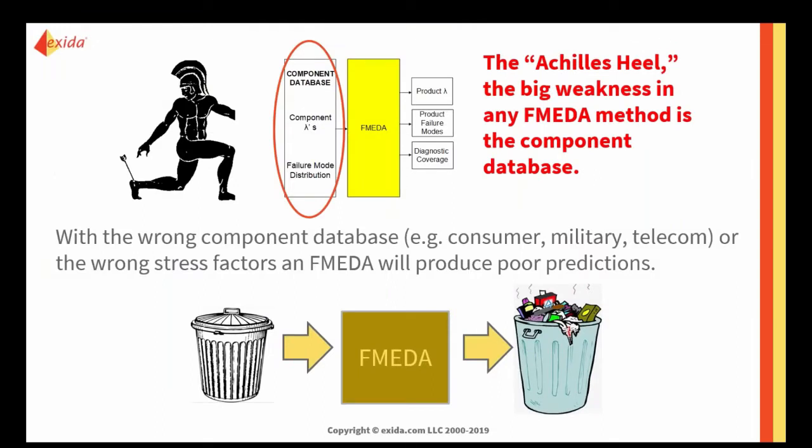Once the functional failure modes are entered, we press the button to add the component to the FMEDA, and the first four lines of the FMEDA are completed. If I want to check results so far, I hit 'view results' and can see the overall FMEDA results at any point. The various metrics for any given safety standard are calculated and displayed as you go. You just keep adding components until you're done.